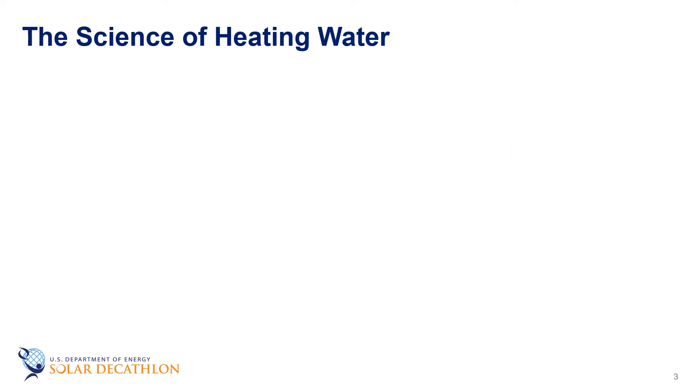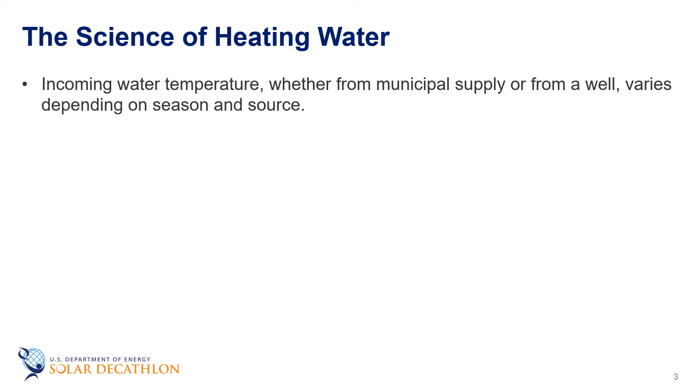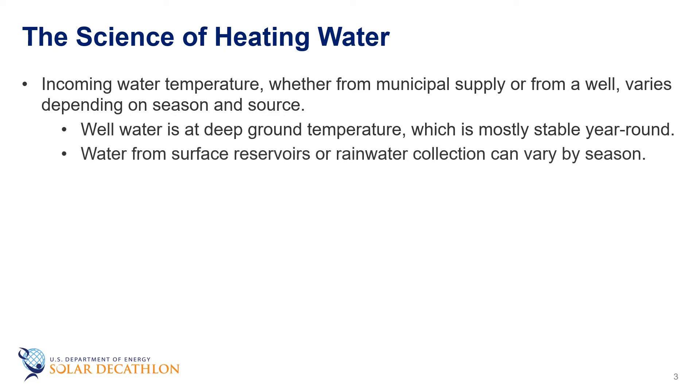Thinking about temperature, the starting water temperature is close to the water temperature coming in from the city water system or perhaps a well. This is highly dependent on season and where the water comes from. Water from wells is at a deep ground temperature and is very stable year round. Water from surface reservoirs or from rain water collection systems can vary by season.